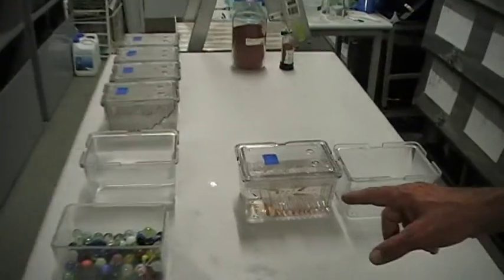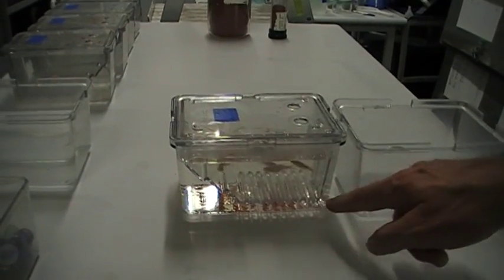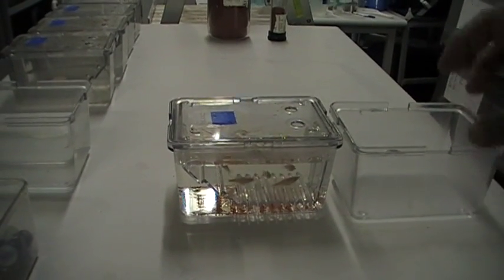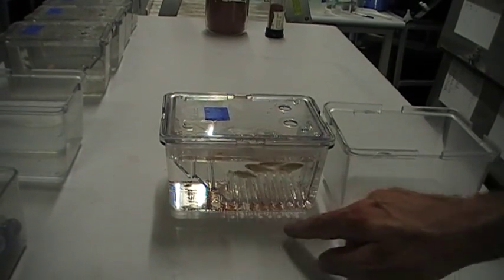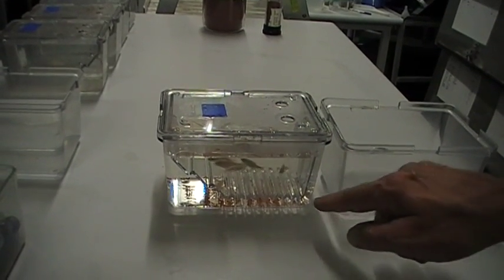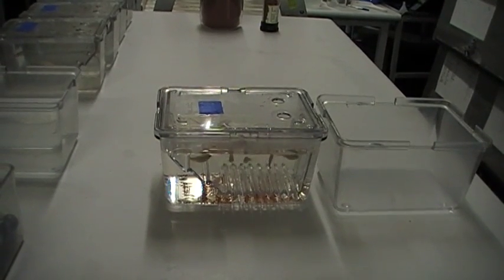And over here we have another system. This is a specially designed tank with slots in the floor and the fish lay their eggs and they fall through the slots and then they collect in the bottom. At the moment you can see the food which we fed the fish earlier that also fell through the slots.